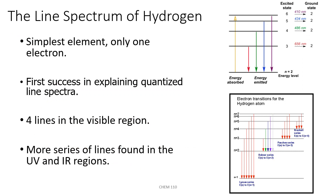When an atom absorbs energy, the electron is raised to a higher energy level, and then when the electron falls to a lower energy level, light of a particular energy and frequency is emitted. This light corresponds to a specific color in the visible region. These are the four different lines we can see for hydrogen: one at 410 nanometers, one at 434 nanometers, one at 486 nanometers, and one at 656 nanometers.